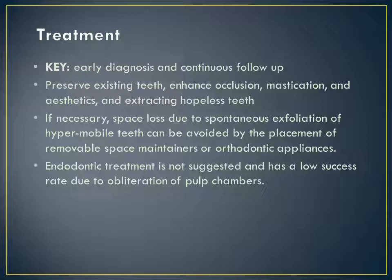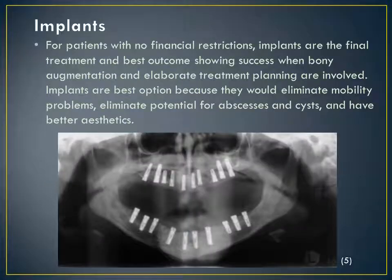Treatment for Dentin Dysplasia Type 1 centers on early diagnosis and continuous follow-up. Most dentists aim to preserve existing teeth, enhance occlusion, mastication, and aesthetics while extracting hopeless teeth. Space loss due to spontaneous exfoliation of hypermobile teeth can be avoided by placement of removable space maintainers or orthodontic appliances. Endodontic treatment is not suggested and has a low success rate due to the obliteration of the pulp chambers. For patients with no financial restrictions, implants are the final treatment and best outcome, showing success when bony augmentation and elaborate treatment planning are involved.